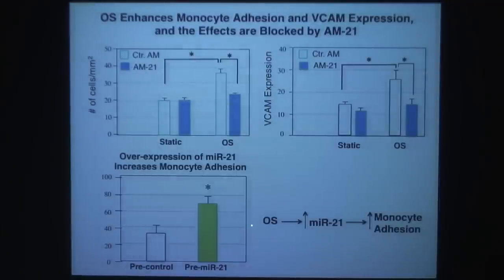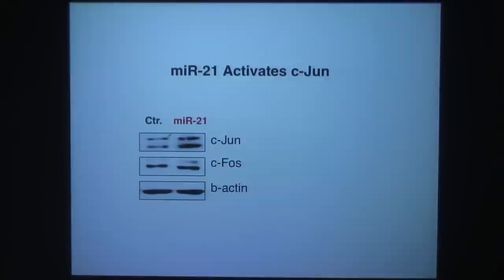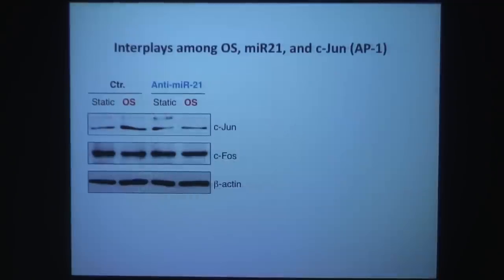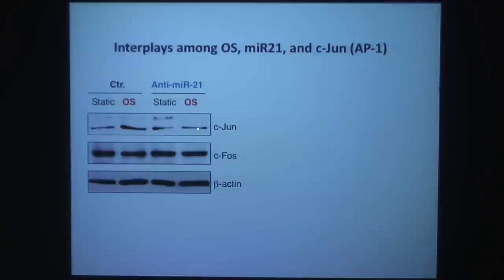miR-21 can also activate c-Fos — if you use antagomir to miR-21, c-Fos goes down. So miR-21 activates c-Fos, which is part of the AP-1 complex. With oscillatory shear, when miR-21 is active, c-Fos increases; with anti-miR-21, oscillatory shear no longer increases c-Fos. Thus oscillatory-shear-induced increase in c-Fos is mediated by miR-21.